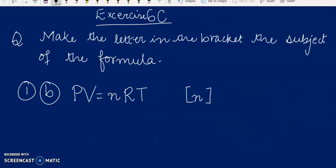Now, the question is, make the letter in the bracket the subject of the formula. You can see that here is an equation: PV is equal to nRT, and n is in the bracket. The question is, make the letter in the bracket the subject of the formula.